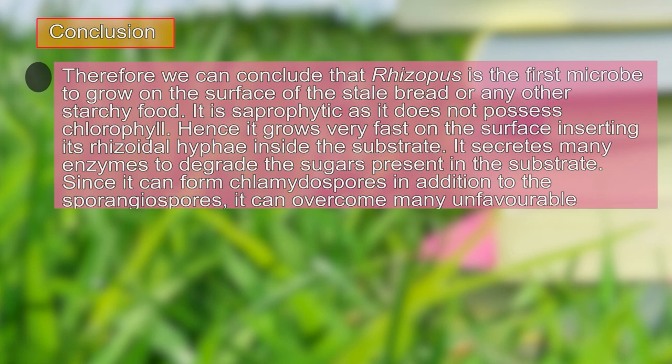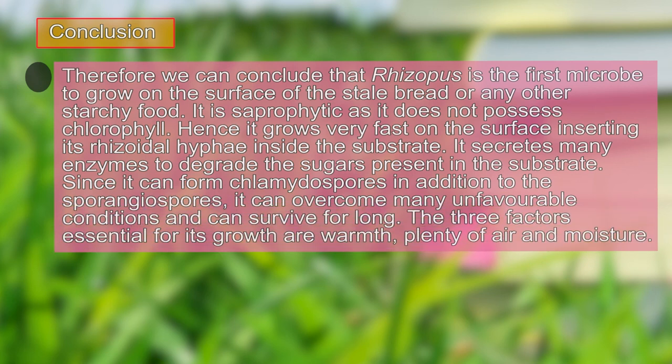Finally, we can conclude that Rhizopus is the first microbe to grow on the surface of stale bread or starchy food. It is saprophytic, lacking chlorophyll, and grows fast by inserting rhizoidal hyphae inside the substrate, secreting enzymes to degrade sugar. Since it can form chlamydospores in addition to sporangiospores, it can overcome many unfavorable conditions and survive for a very long period.